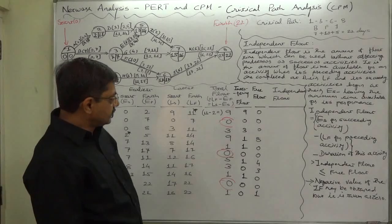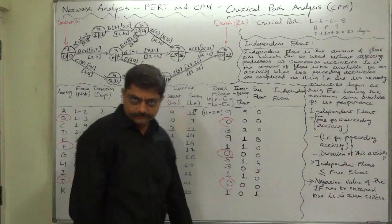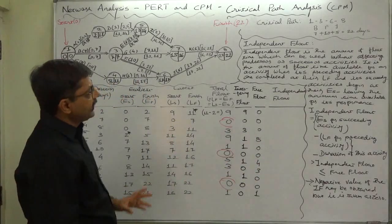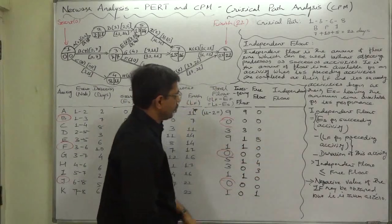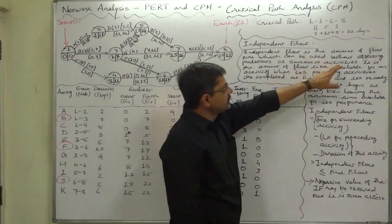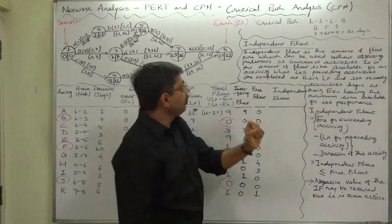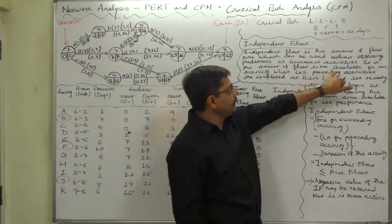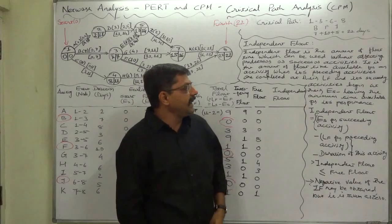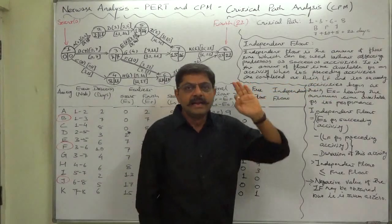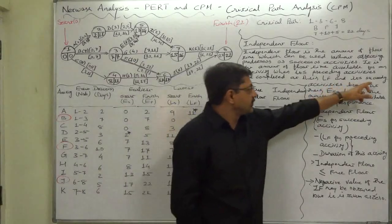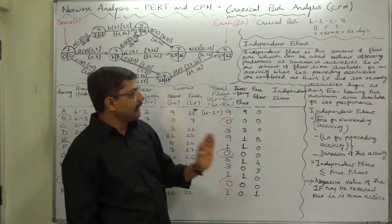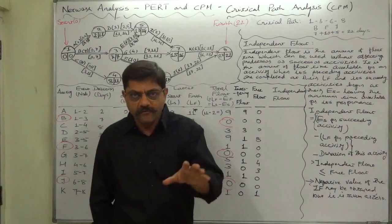Independent float is actually a part of free float, not exactly the total float. Out of total float we can consider about independent float. Independent float is the amount of float time which can be used without affecting predecessor or successor activities. It is the amount of float time available for an activity when its preceding activities are completed at their latest allowable finish time and its succeeding activities begin at their earliest start time, leaving the minimum time available for the performance of the current activity.